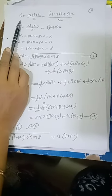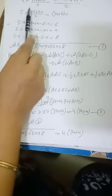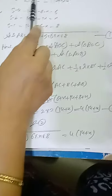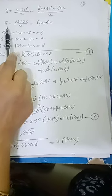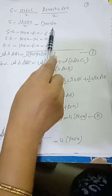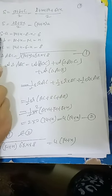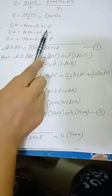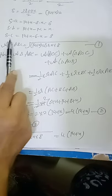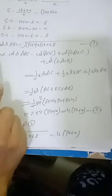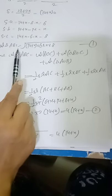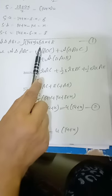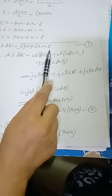First we find S, the semi-perimeter, A plus B plus C by 2. So S equal to 14 plus x. Now we separately find S minus A equal to 6, S minus B equal to x, and S minus C equal to 8. So area of triangle ABC equal to square root of S into S minus A into S minus B into S minus C.